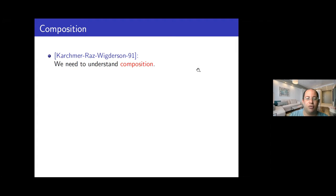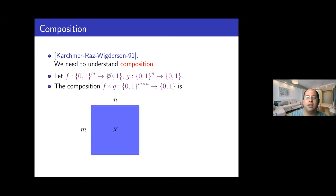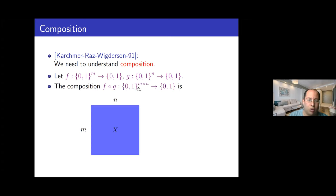One approach proposed by Karchmer, Raz, and Wigderson in '91 is to try to understand the composition of functions, or what's called the block composition of functions. So let's say we have two functions F and G — they take M and N bits respectively, and both are Boolean, outputting one bit. We can compose them in the following natural way: the composition takes an M-by-N matrix as an input.